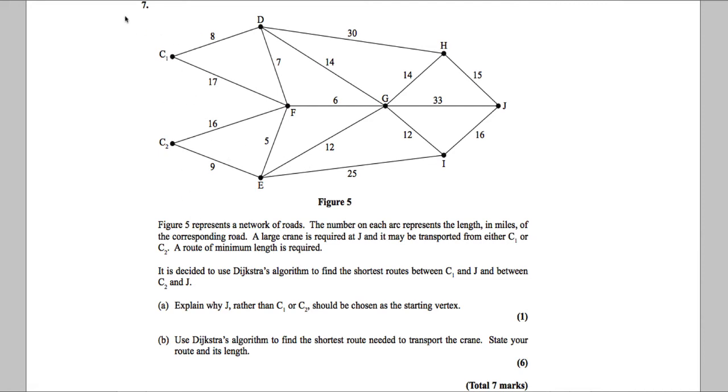In this question, we are told that figure 5 represents a network of roads. The number on each arc represents the length in miles of the corresponding road. A large crane is required at J and it may be transported from either C1 or C2.